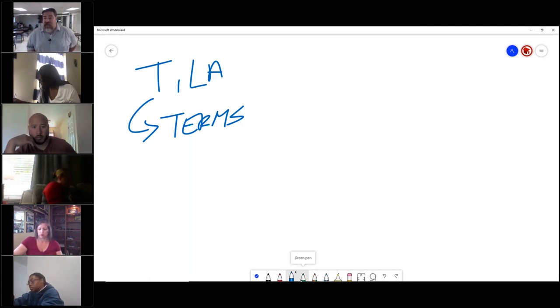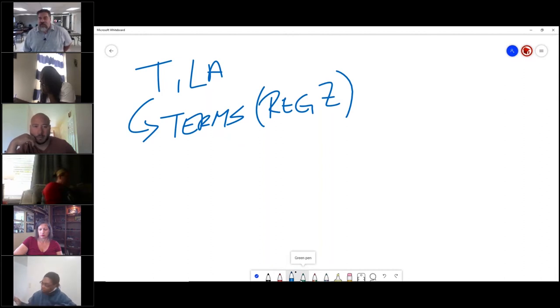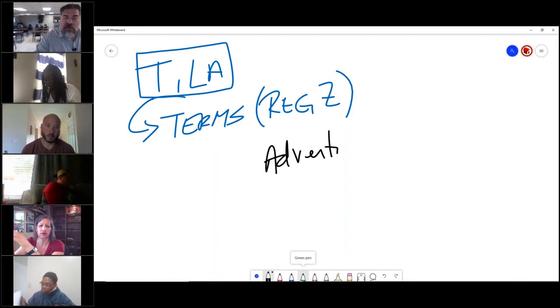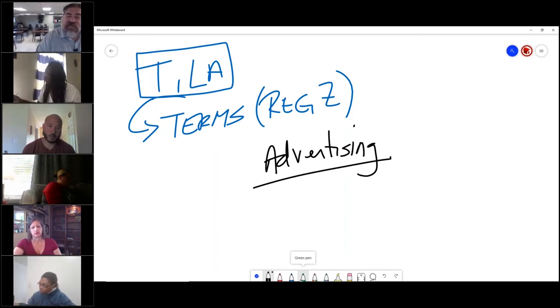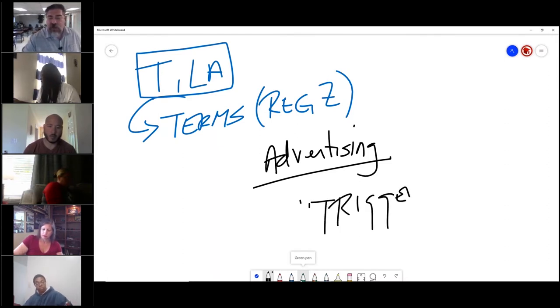Think of TILA starting with T - terms of the loan. This is where Regulation Z happens. Regulation Z deals with disclosing all the loan amounts. It deals with the advertising of credit. If I mention a trigger term, I have to mention all of them.